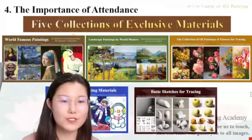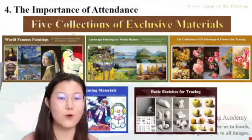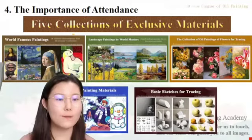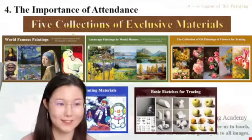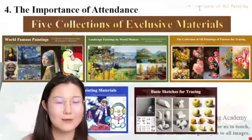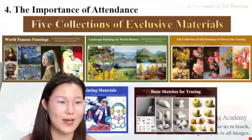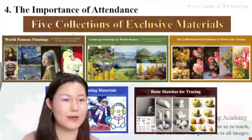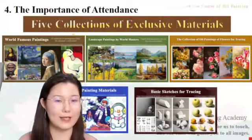So what do these collections include? First of all, the world famous paintings. When mentioning oil paintings, you will all think of the Mona Lisa. I don't believe there is anyone in the class who has not seen this work before. And if you want to see the Mona Lisa, where do you have to go? You have to go to the Louvre in France — you have to buy a ticket, make an appointment and queue.